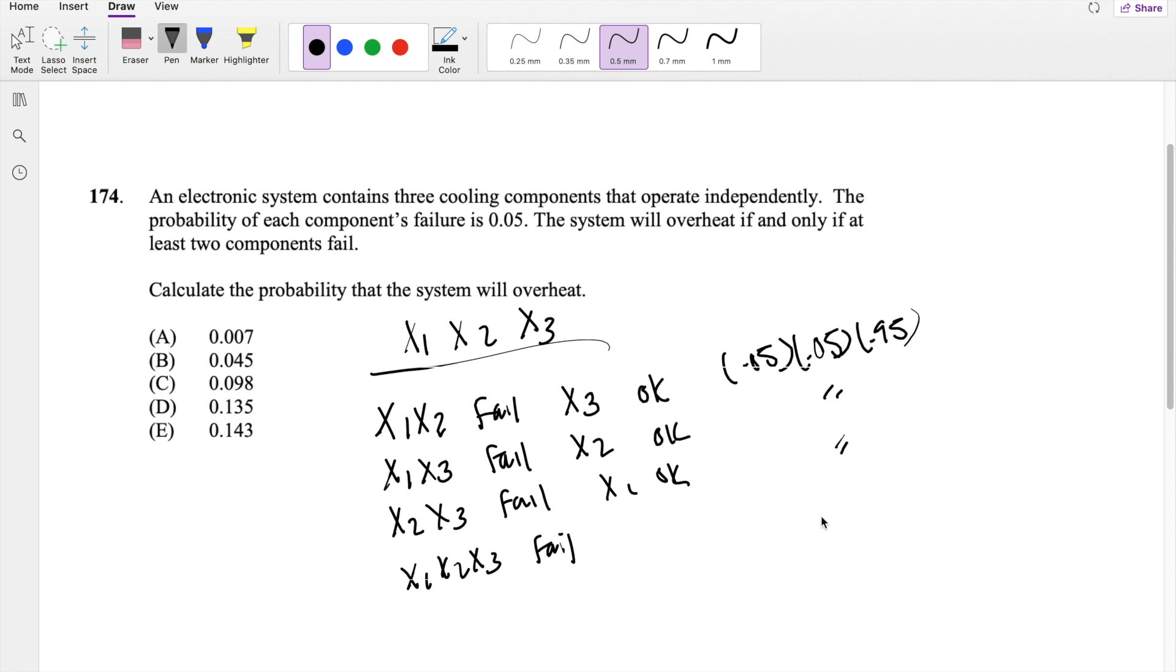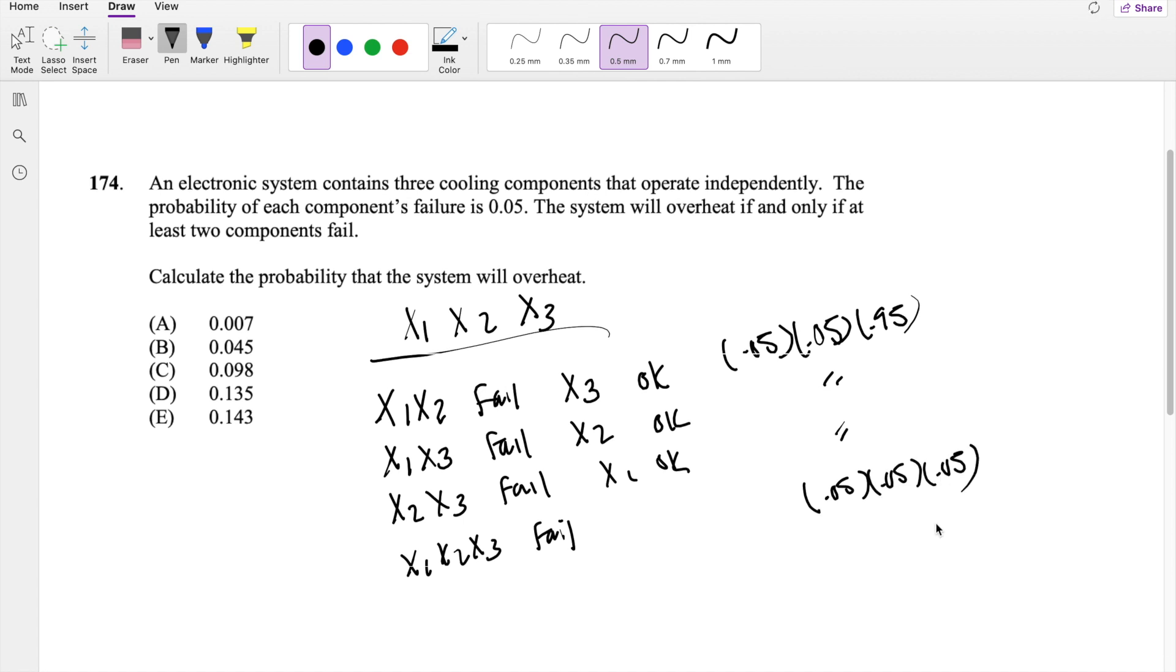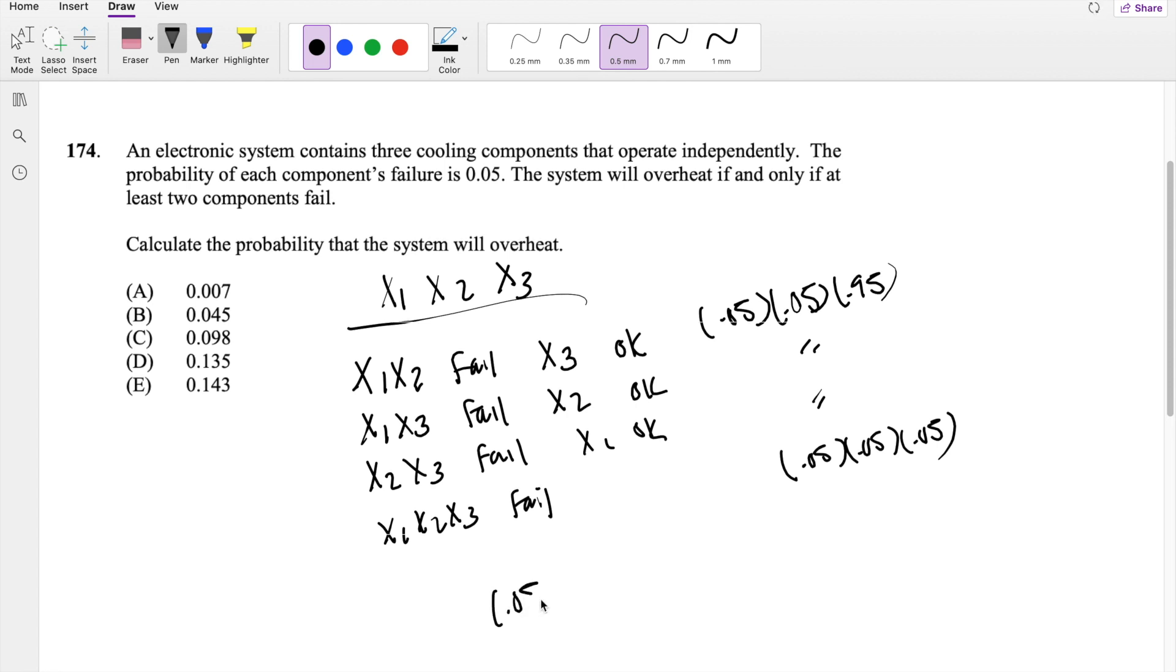The last one, all three of them failing, that's 0.05 times 0.05 times 0.05. So you get 0.05 squared times 0.95. This whole thing, there are three of them, three combinations that can happen, plus the third probability which is 0.05 cubed.